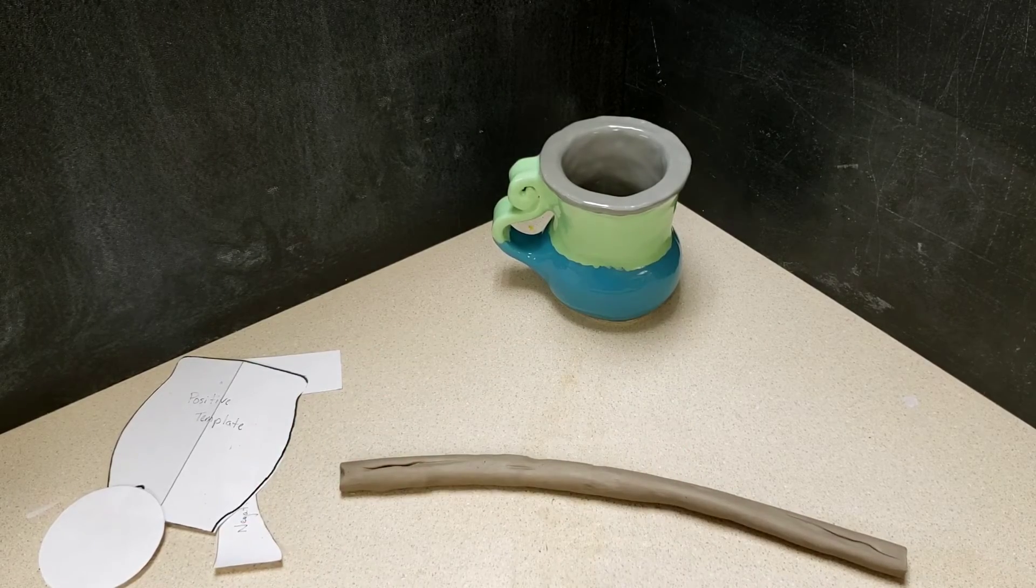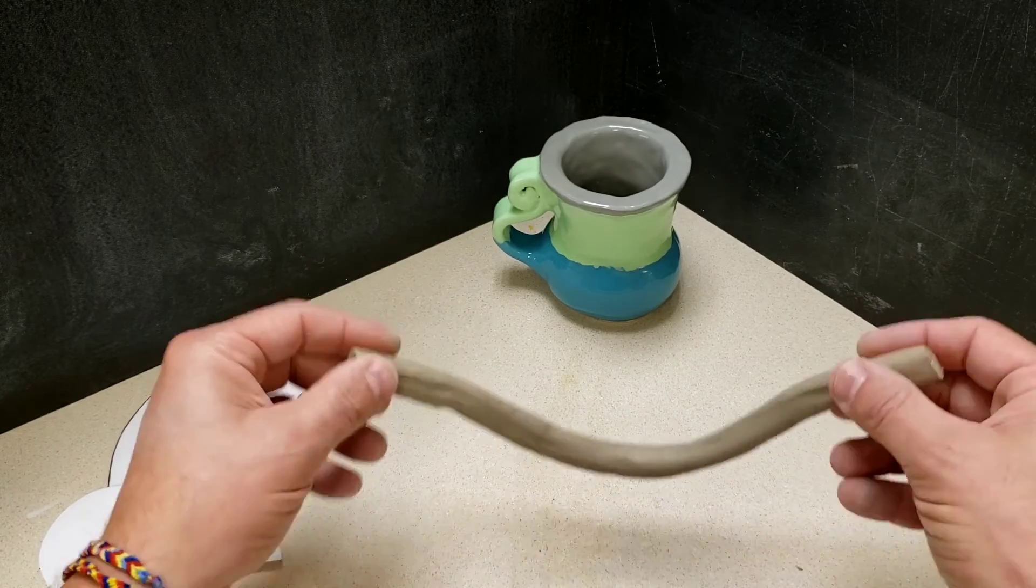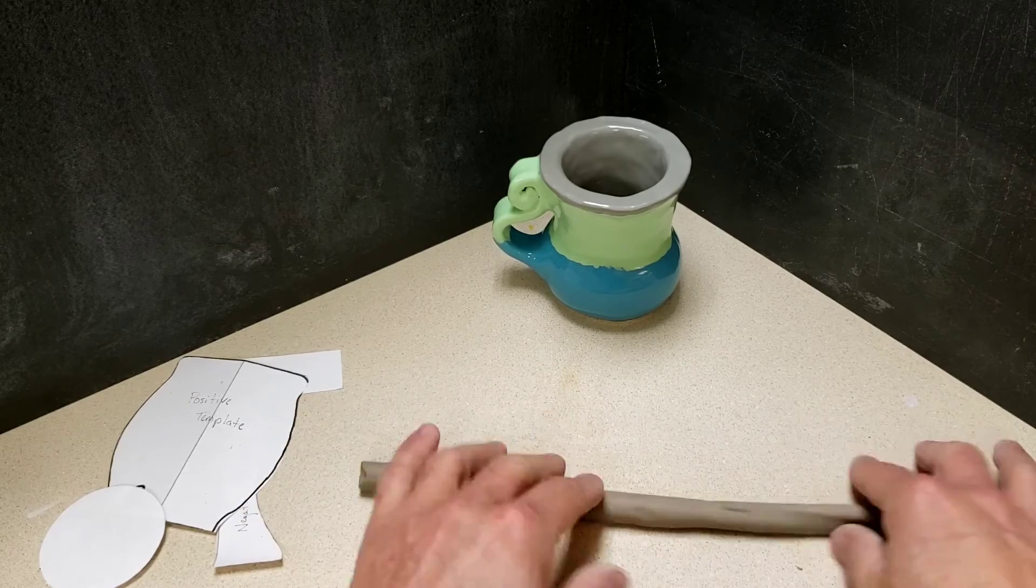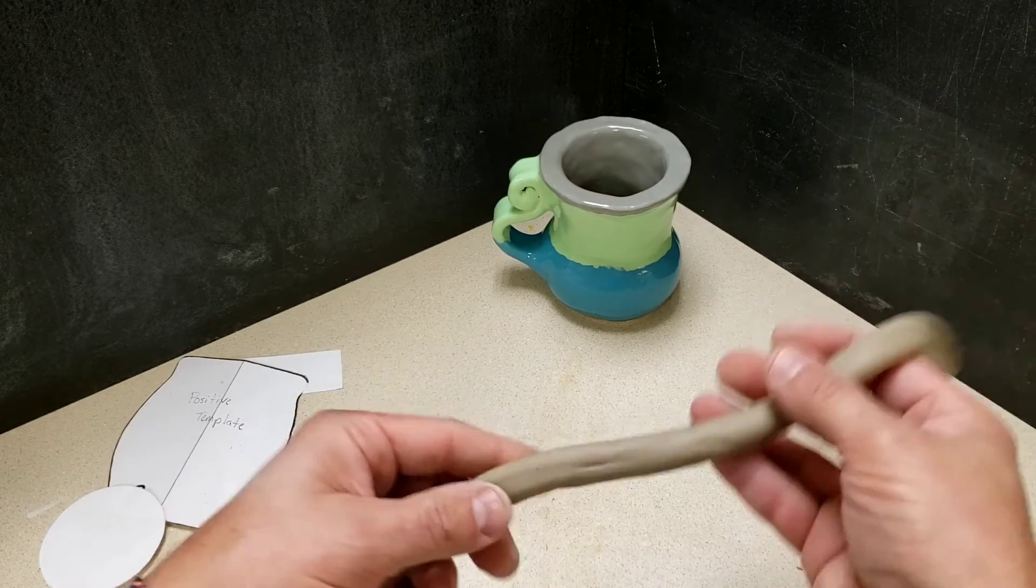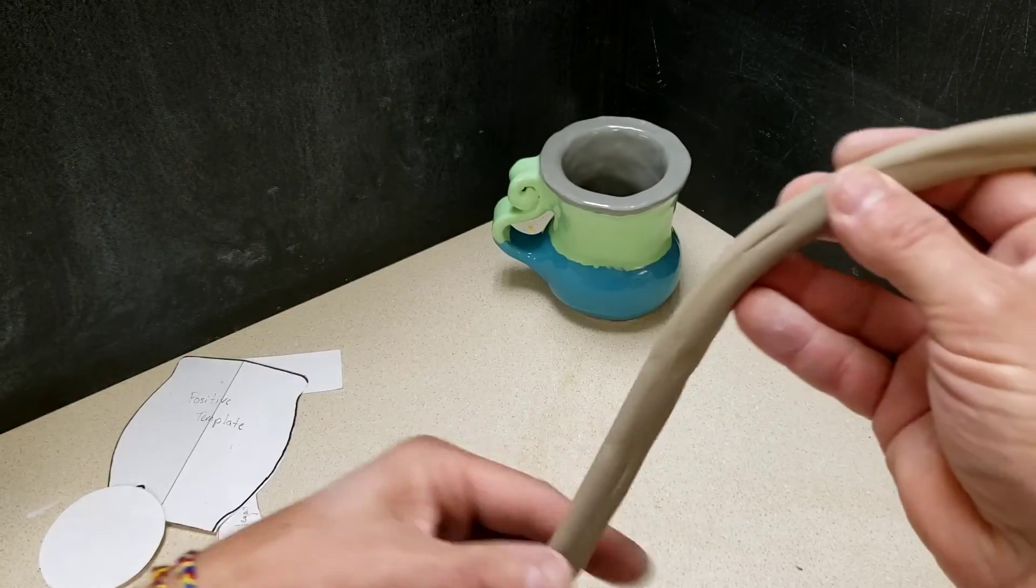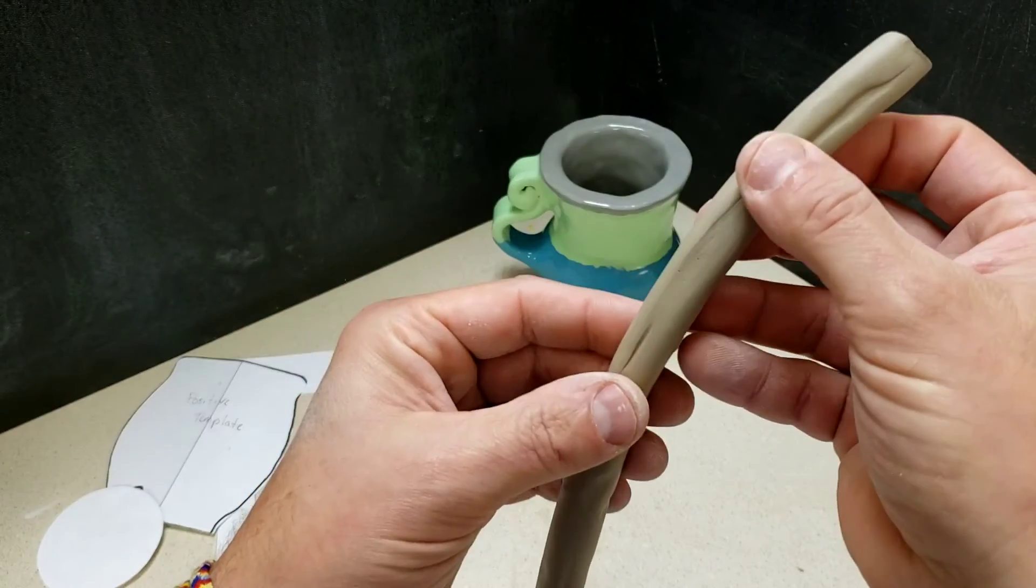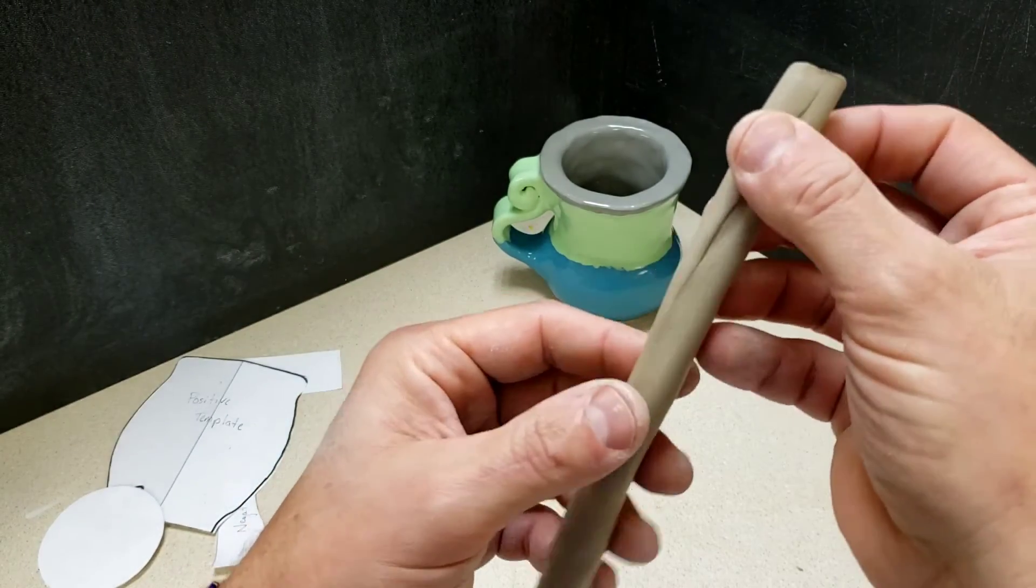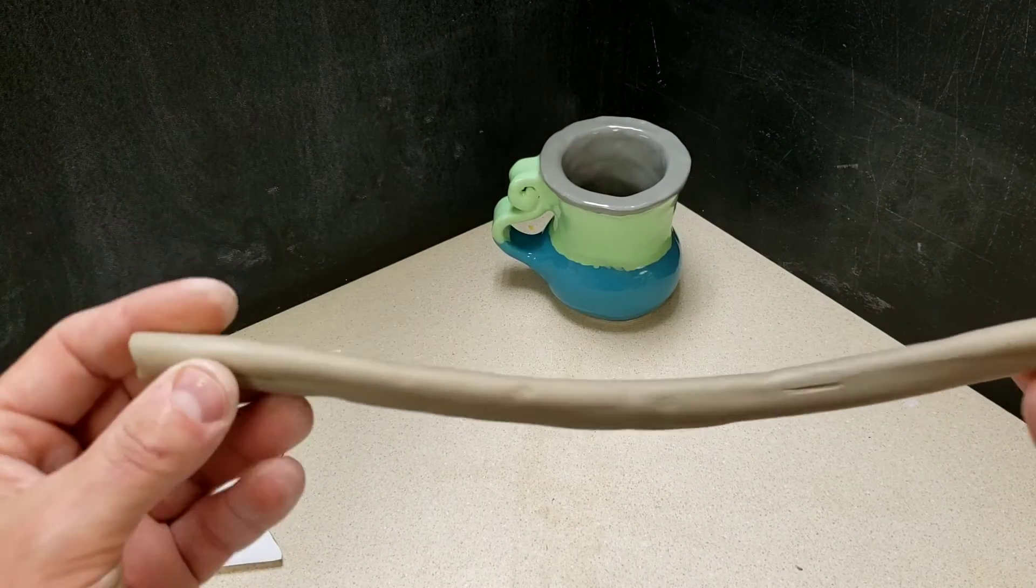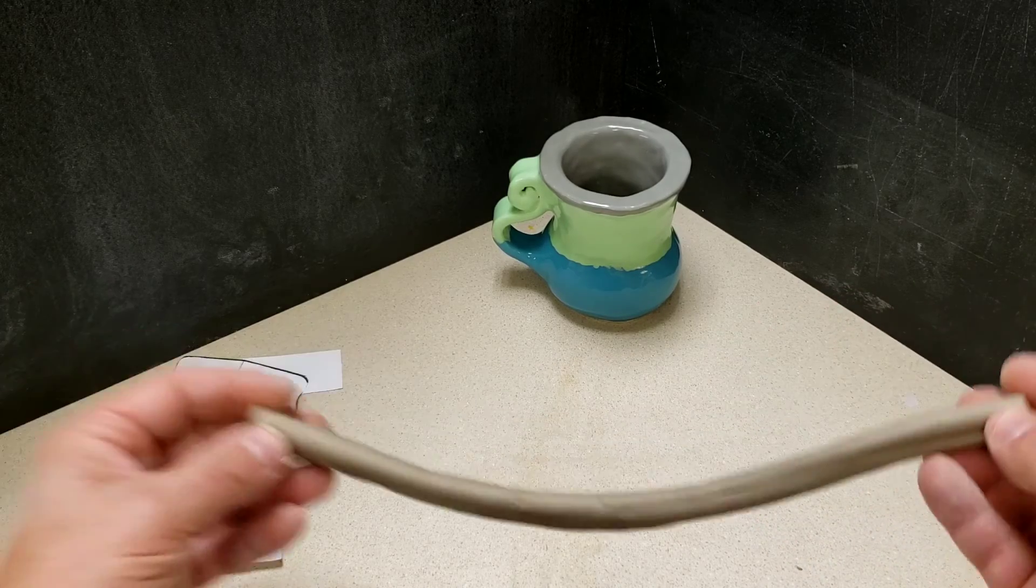In some cases you'll say, well that coil is not quite right and I'm going to wad it up because it's not worthy of my pot, especially at the beginning as you're practicing. This one I would use because it's pretty even from one side to the other. It's about the right thickness. It's not cracking anywhere, so that's good. Sometimes if you roll too long you'll notice it start to crack. That's an issue. We don't want that, but I think this will be an okay coil. So I would use that one.